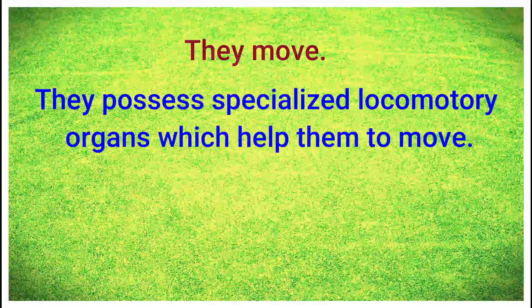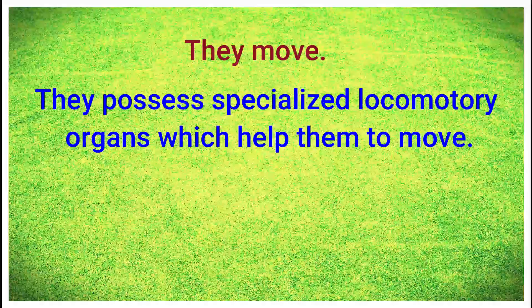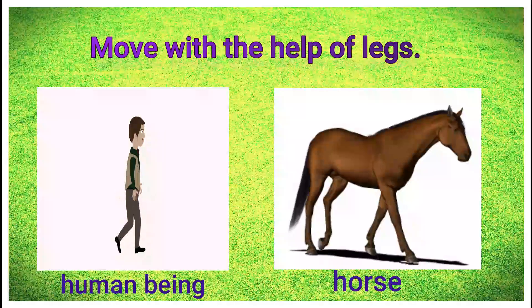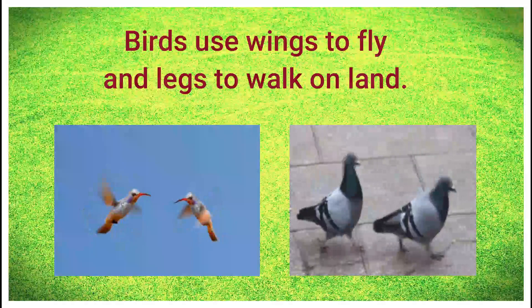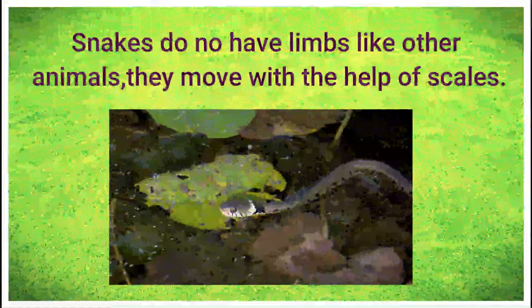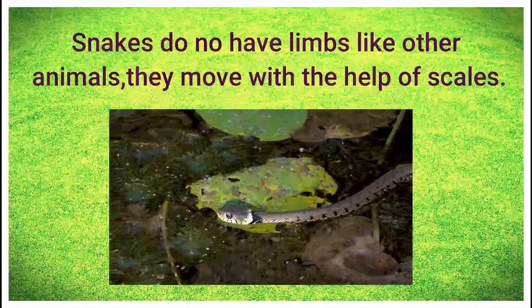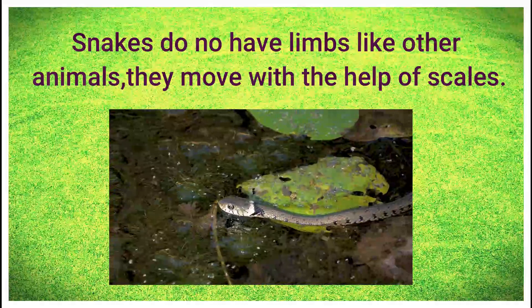Living things move. Living things possess specialized locomotory organs which help them to move from one place to another. As you can see here, human beings and mammals have legs to move, and birds use wings to fly and legs to walk on land. Snakes do not have legs like human beings and mammals, but they use scales present on the lower surface of their body to help them move on the ground.